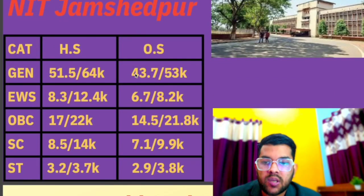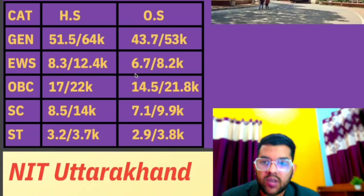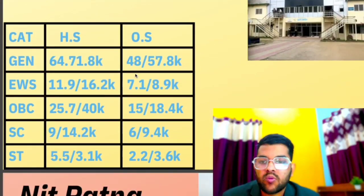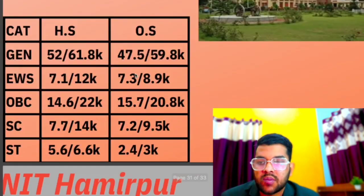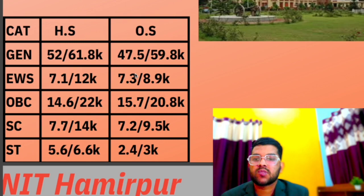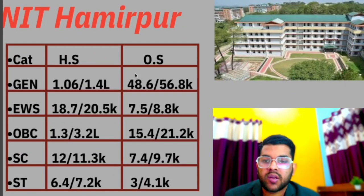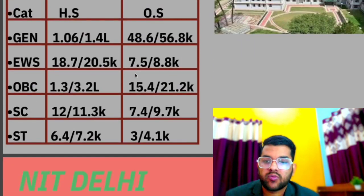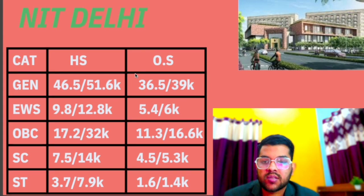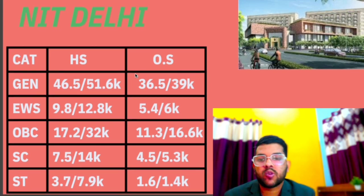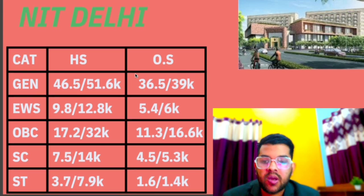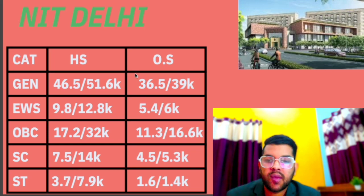For NIT Surat: general 58,500, EWS 9,000, OBC 17,900, SC 9,600, ST 4,100. For NIT Goa: general 44,700, EWS 6,600, OBC 14,000, SC 6,100, ST 2,000 — for other state. For NIT Jamshedpur: general 43,700, EWS 6,700, OBC 14,500, SC 7,100, ST 2,900. For NIT Uttarakhand: general 48,000, EWS 7,100, OBC 15,000, SC 6,000, ST 2,200 — for other state male. For NIT Patna: general 47,500, EWS 7,300, OBC 15,700, SC 7,200, ST 2,400. For NIT Hamirpur: general 48,600, EWS 7,500, OBC 15,400, SC 7,400, ST 3,000.